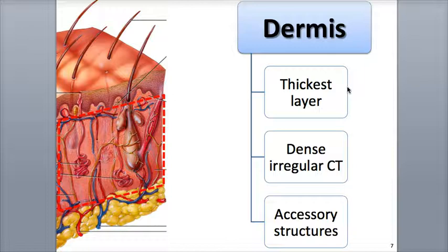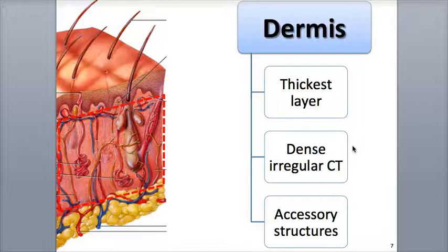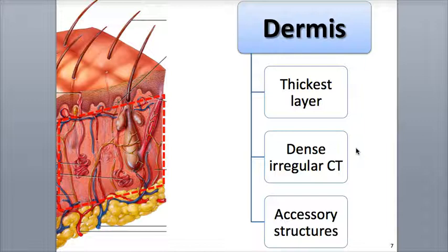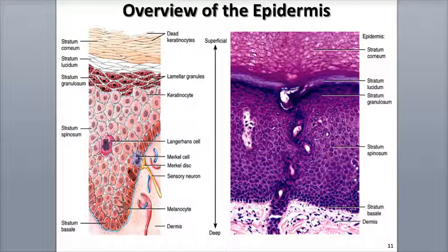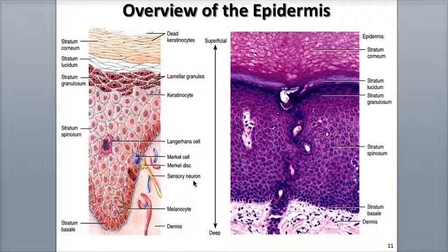The dermis is the thickest, deeper region of the skin that's made up of dense, irregular connective tissue, which contains lots of collagen for strength, as well as elastic fibers, which give the skin its ability to stretch and recoil. These protein fibers are woven together to give the skin lots of tensile strength, meaning it can be pulled and stretched without damage. The dermis also includes a diverse collection of accessory structures, such as the glands, hair follicles, nerves, and blood vessels. Now let's explore the overall structure and function of the epidermis, the different cell layers or strata, and the different types of cells found within these layers.